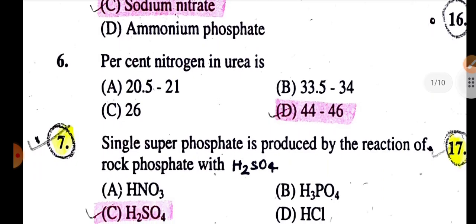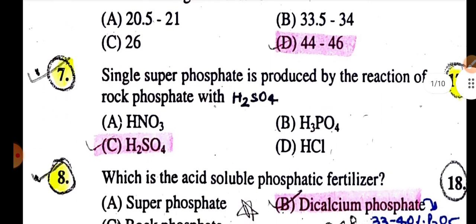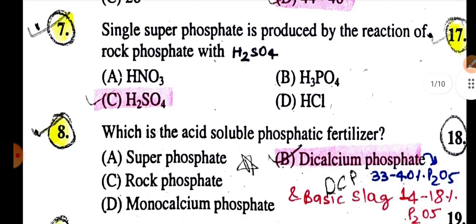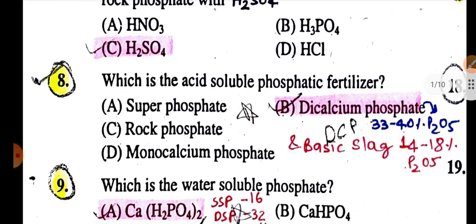Percentage of nitrogen in urea is 46%. Single superphosphate is produced by reaction of rock phosphate with H2SO4. Which is the acid-soluble phosphatic fertilizer is dicalcium phosphate, CaHPO4, which contains 32-34% P2O5.